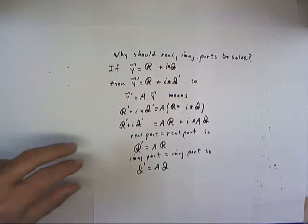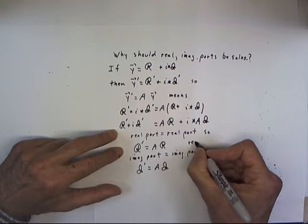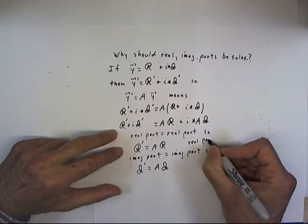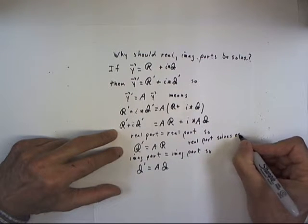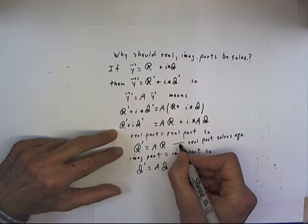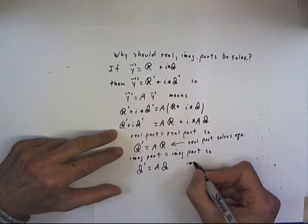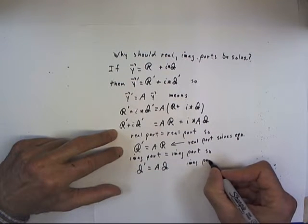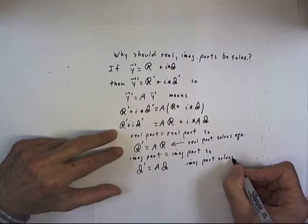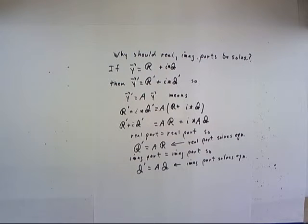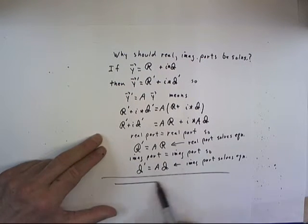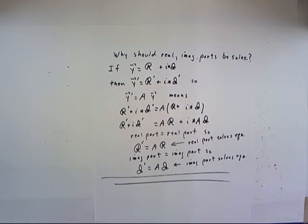Well, what does this say? This says that the real part solves the equation. And this says that the imaginary part solves the equation. And that's what we set out to demonstrate. This is why the real and imaginary parts have to be solutions.